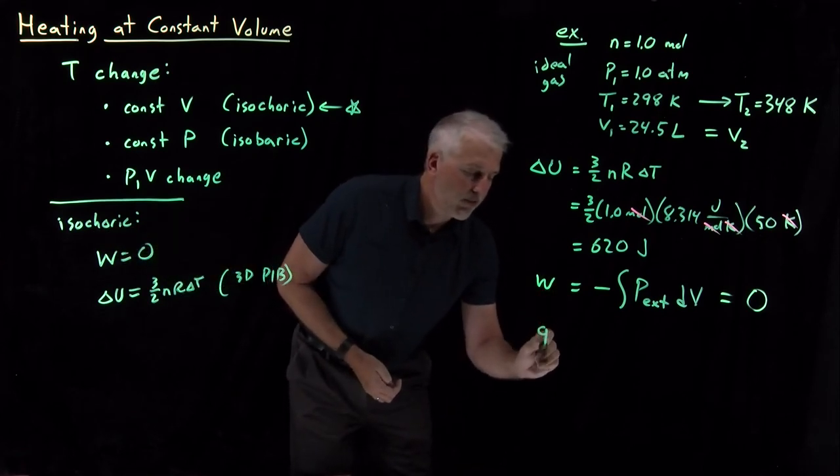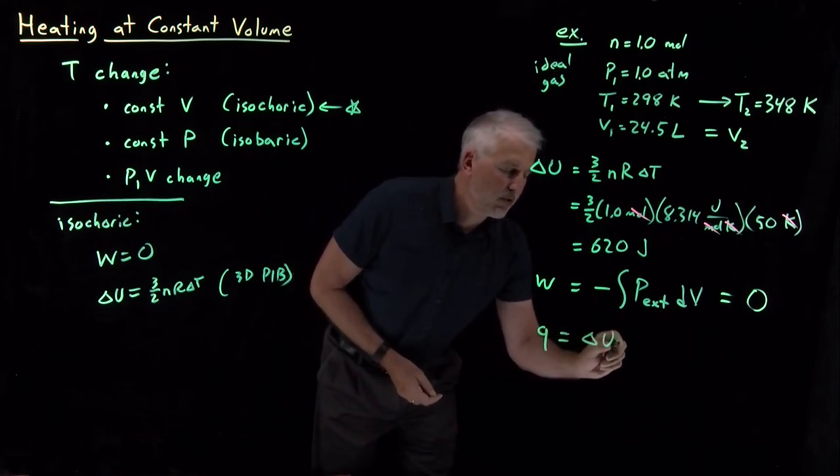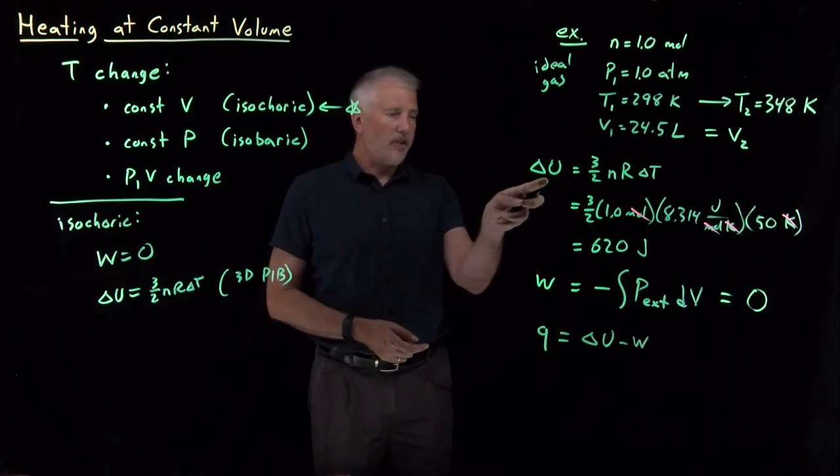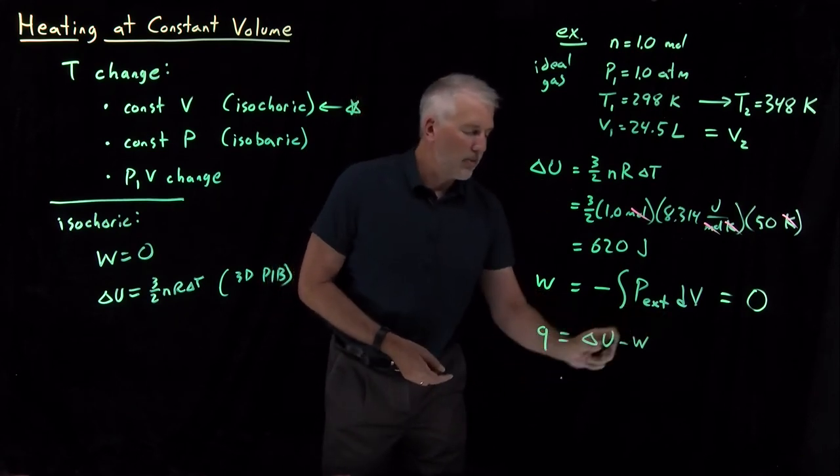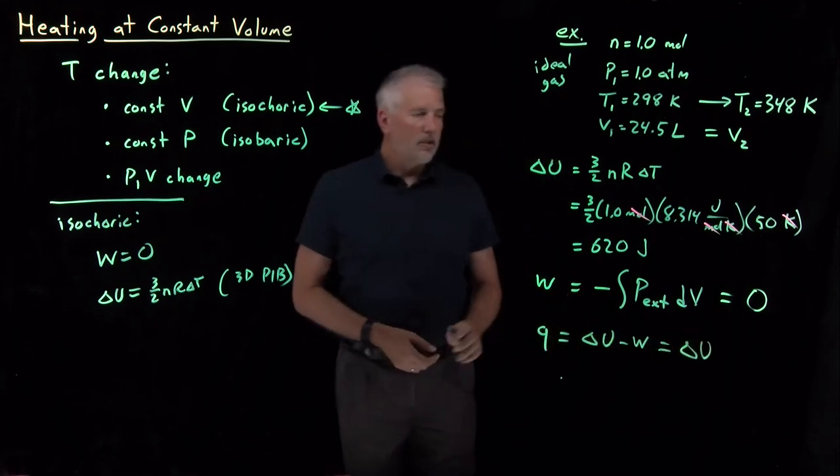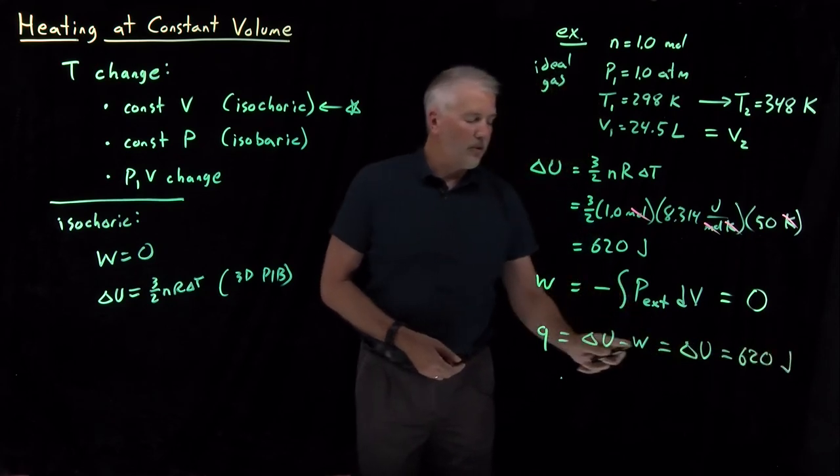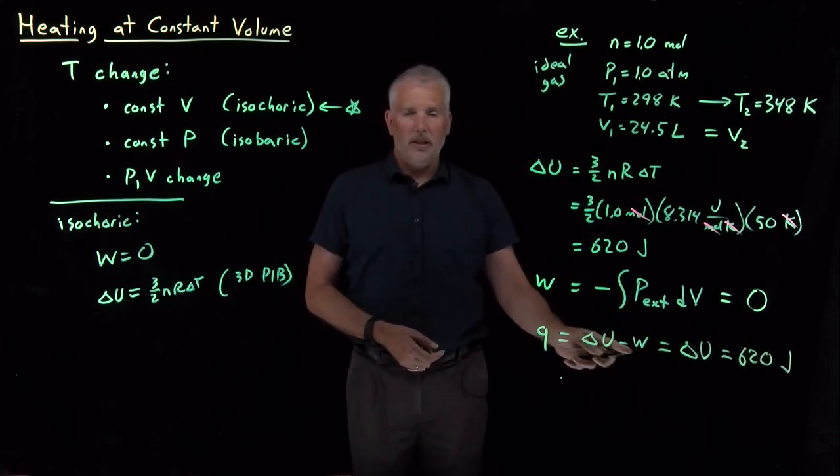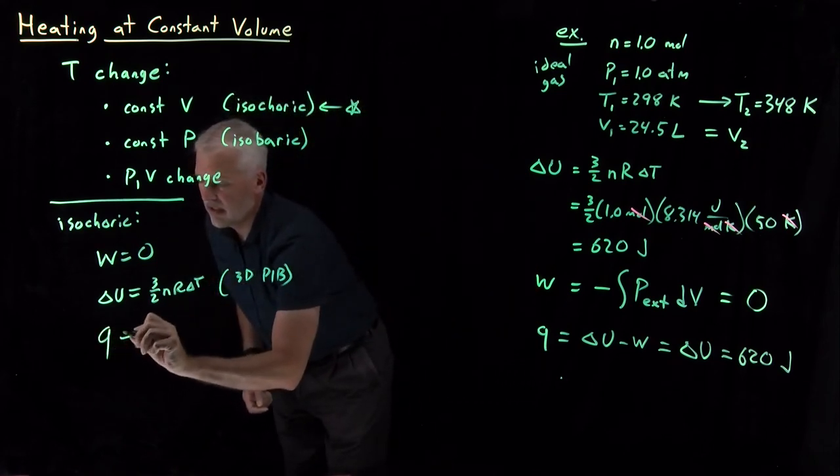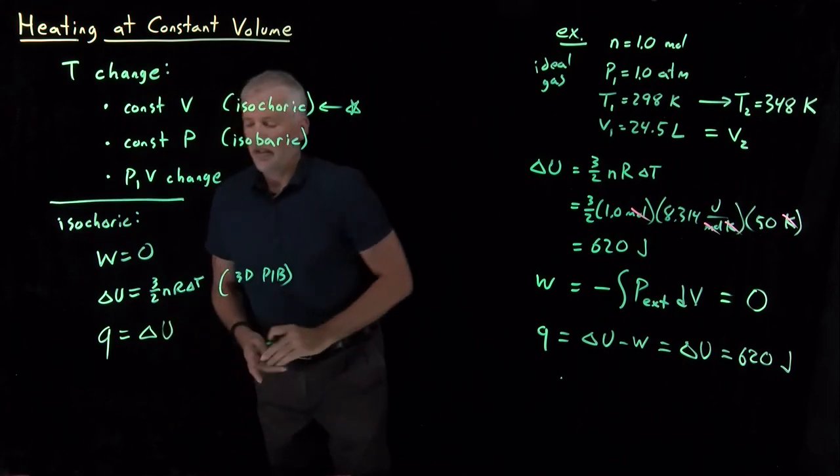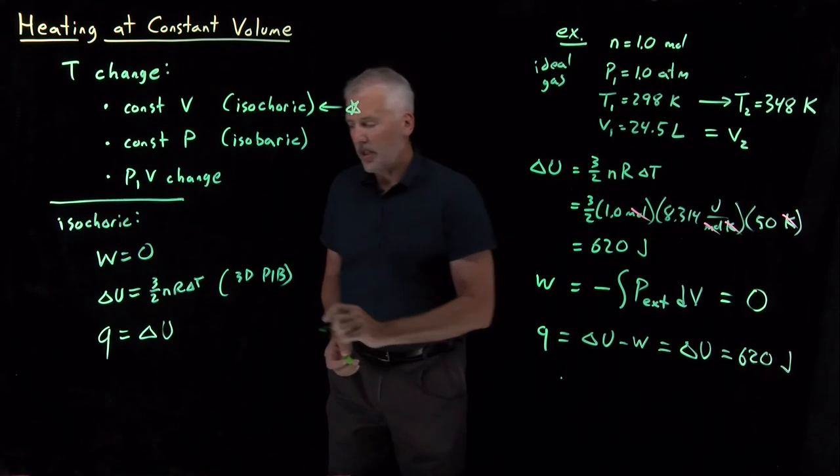And then lastly, if we want to calculate Q, the first law tells us that Q is just delta U minus W. So since we know how to calculate delta U and we know how to calculate W, in fact, W is zero. So whatever value we got for delta U, we're going to get the same value for Q because the work is zero. So in general for an isochoric process, because the work is zero, Q and delta U are always going to be the same thing for any isochoric process.